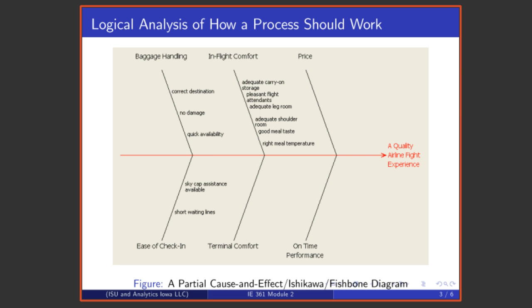Here's an example of a simple fishbone or Ishikawa diagram made to help analyze how one would go about delivering a quality airline flight experience. The setup here is that one thinks about the various elements that go into producing a particular output. So if one's interested in delivering to a customer a quality airline experience, one might consider price,